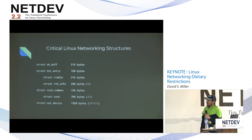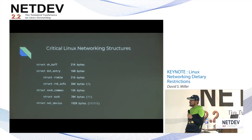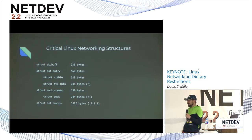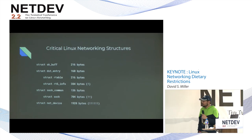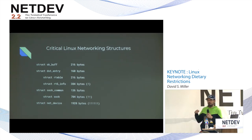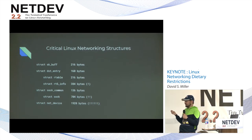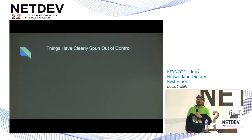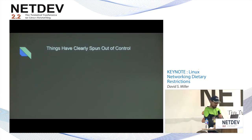We also have struct sock, which is kind of the base class for all sockets at 136 bytes. Then struct socket itself, a base class for all protocol-specific sockets in the networking tree, at 704 bytes — quite large. And then struct net_device, which is almost 2K. This doesn't even take into consideration all the sysfs files instantiated when you create a net device. That thing is enormous. So it looks like we have a lot of work to do, and things have clearly spun out of control.